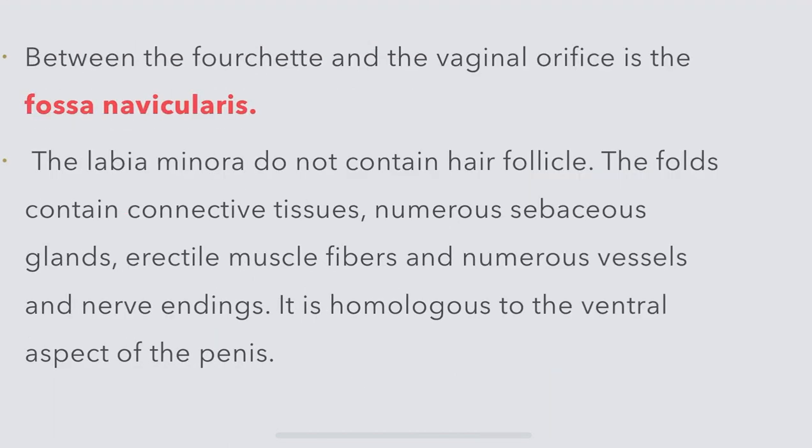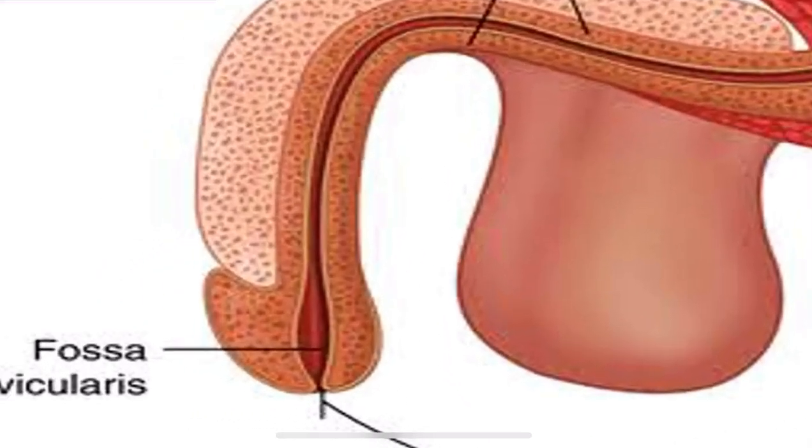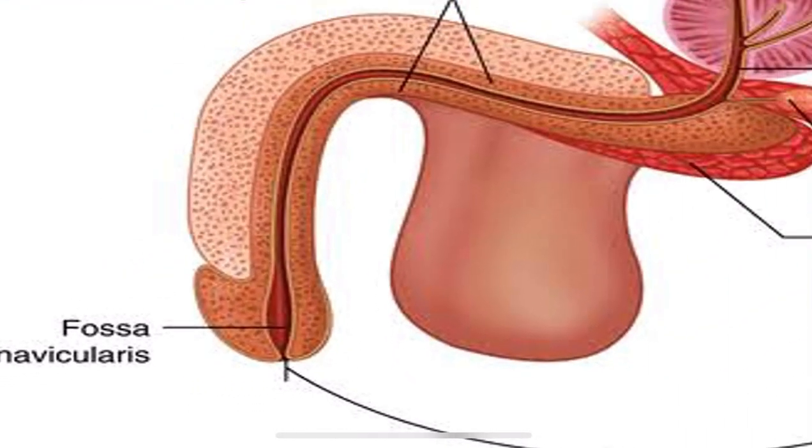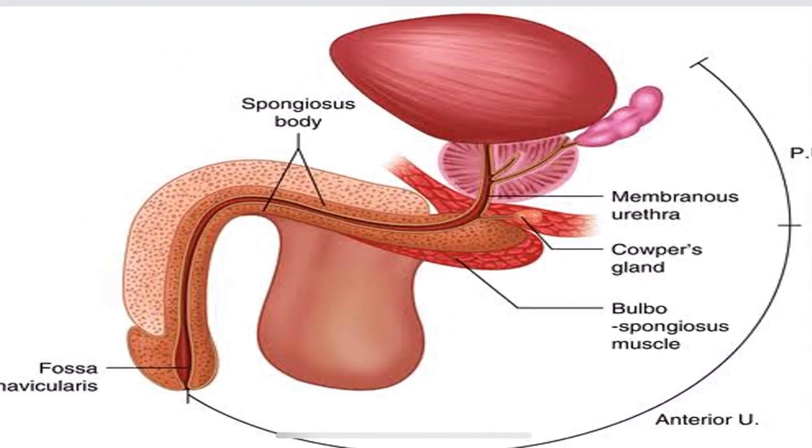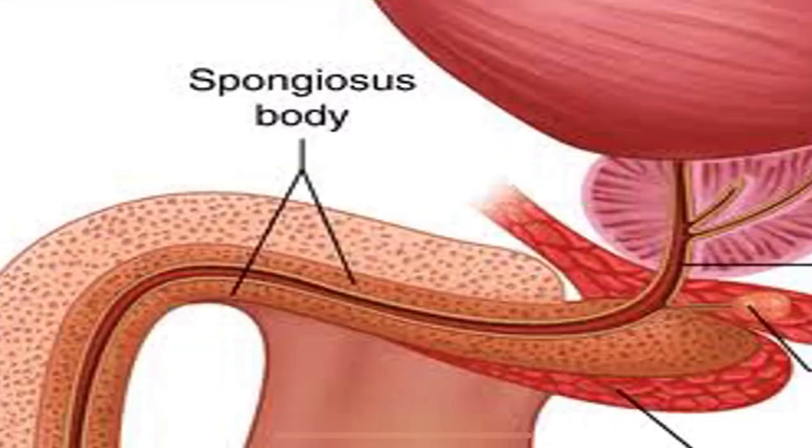The labia minora do not contain hair follicles. The folds contain connective tissue, numerous sebaceous glands, erectile muscle fibers, and numerous vessels and nerve endings. Labia minora are homologous to the ventral aspect of the penis in the male.